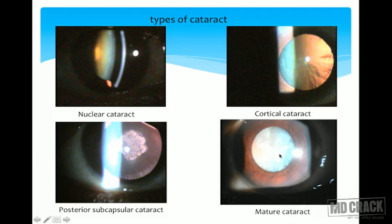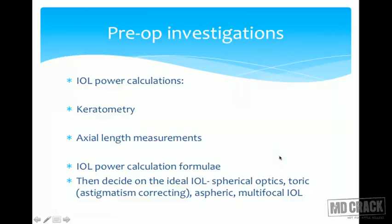Mature cataracts can progress to two outcomes. One is the hypermature cataract where the entire cortex liquefies and the endonucleus floats down into the lens capsule — called the Morgagnian type. Alternatively, it can lose water, shrink, and shrivel into a mass called a sclerotic cataract.